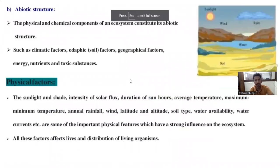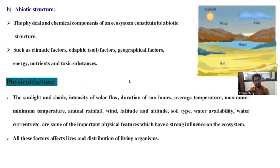Now we discuss about the abiotic structure. Abiotic means non-living components. The abiotic components include sunlight, wind, rain, water, and soil. The abiotic structure means the physical and chemical components of an ecosystem constitute its abiotic structure — such as climatic factors, edaphic factors (soil factors), geographical factors, energy, nutrition, and trophic structure.